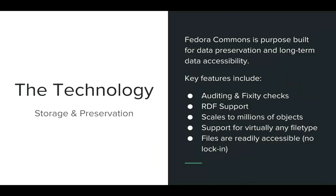The final core component is Fedora Commons, which is the layer that stores and preserves all of our digital content. Fedora Commons is purpose-built for data preservation and long-term accessibility. Key features include auditing and fixity checks, RDF/XML support, the ability to scale to millions of objects, support for virtually any file type, and built-in interoperability — meaning data can be exported or migrated to another format should you require that.